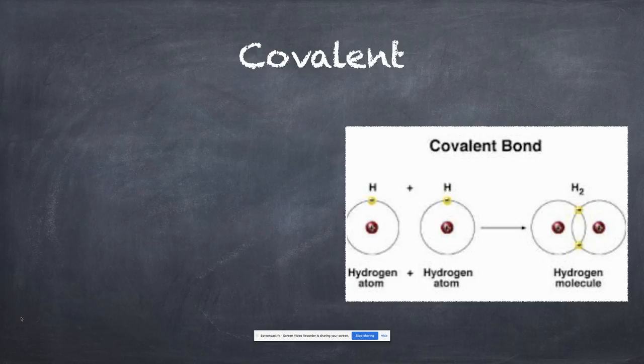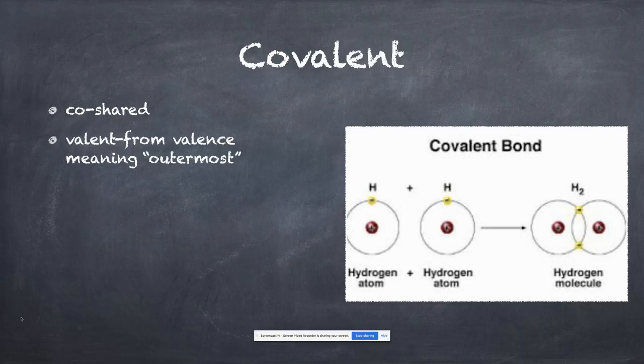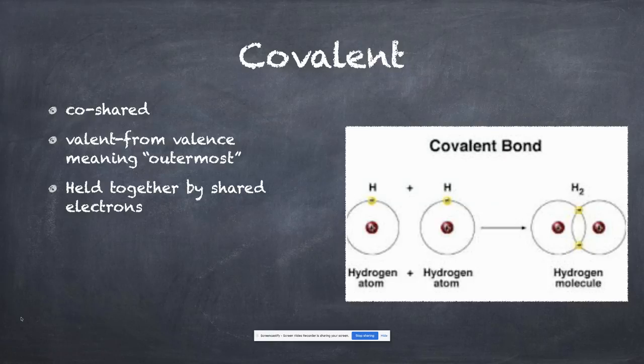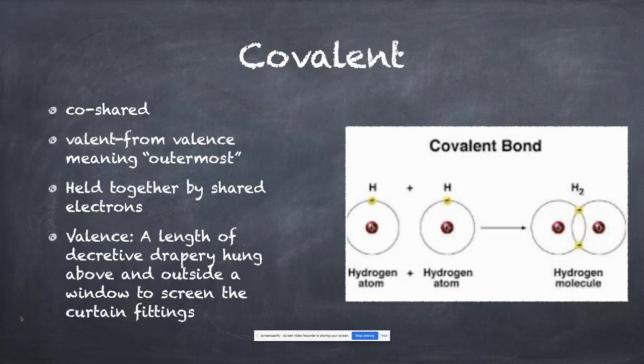Covalent. Let's do some searching about this word. Co as a prefix means shared, like cohabitate means to share a place, a habitat where you live. Valent is coming from valence, meaning outermost. This means you're held together by shared outermost electrons. However, valence also means, according to the dictionary, a length of decorative drapery hung above a window to screen the curtain fittings. When the wife was putting drapery in our house and the guy started talking about the valence, my ears perked up because I had no idea that's the term they used. That outermost piece of drapery at the top, outermost like outermost electrons.